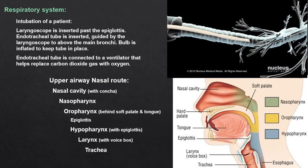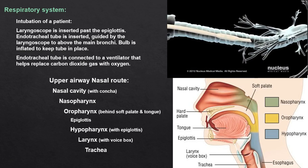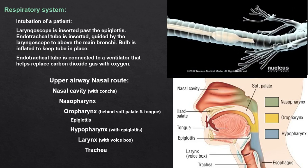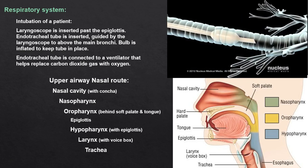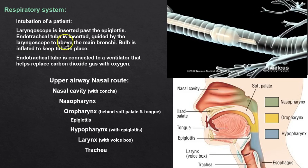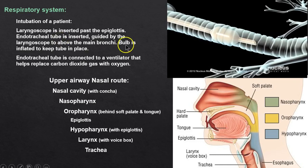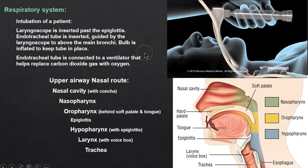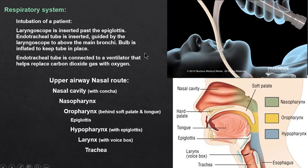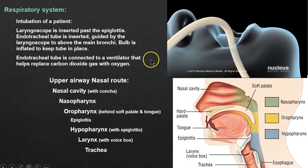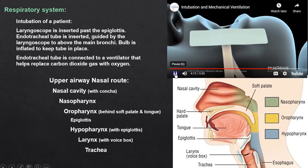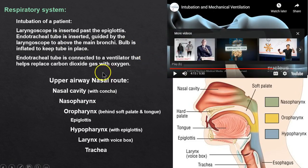Inflate the bulb so that the endotracheal tube stays in place, then take the tube, hook it to a ventilator, and tape it to the side of the mouth.